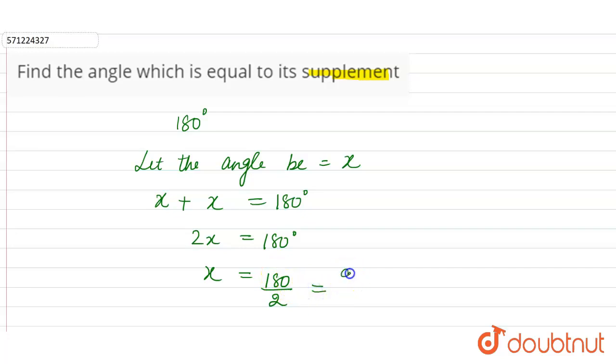So 180 divided by 2 means 2 into 9 is 18 and 0. So 90 degrees and this is the correct answer.